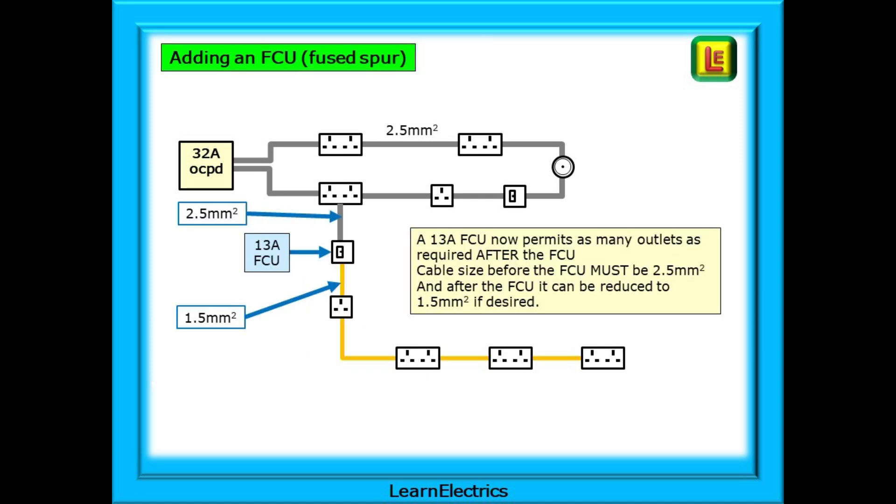Shown here, we now have a fused spur. Straight off the ring, we have a 13 amp FCU and we can put as many socket outlets as we need after the FCU. Look at the cable colours and sizes. From the ring to the FCU, it is 2.5 cable. After the FCU, it can, if we wish, be reduced to 1.5mm cable, shown orange here.